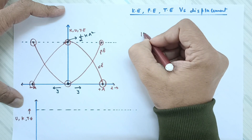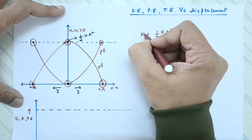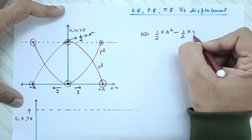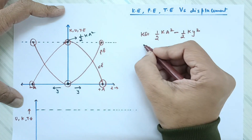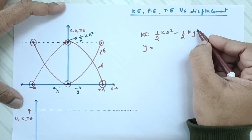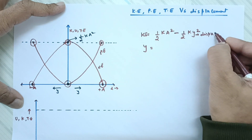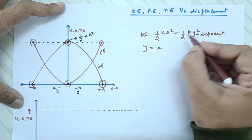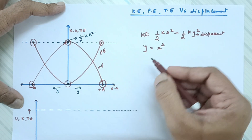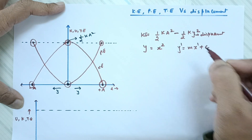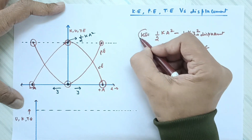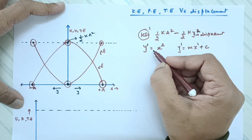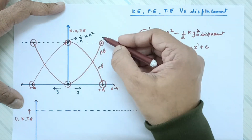The reason the graph is not straight is that kinetic energy equals half k a square minus half k y square. We are plotting kinetic energy on the y-axis and displacement on the x-axis. The power of displacement is two, while the power of kinetic energy is one — so this is an equation of a parabola. That is why we get a curved graph. You can only have a straight line when both variables are raised to the power of one.